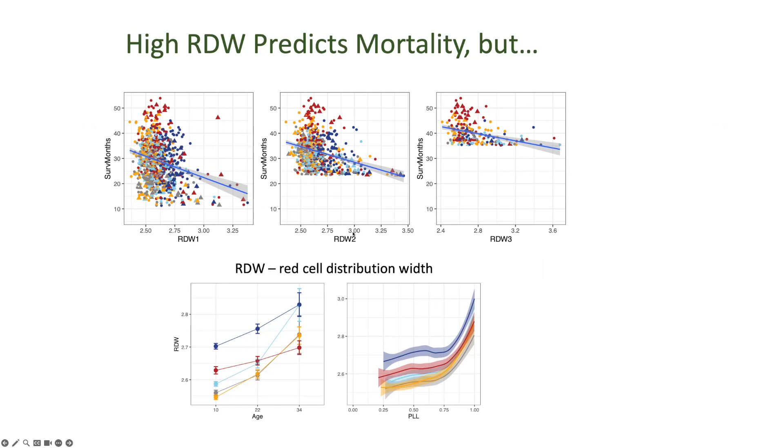If we go to 20 months, 22 months actually, the reason the plot looks funny is because mice that died before 22 months did not get their second RDW measure. So everybody who was measured is now in the top part of the plot, and you can see again this phenomenon, and then out here at 34.